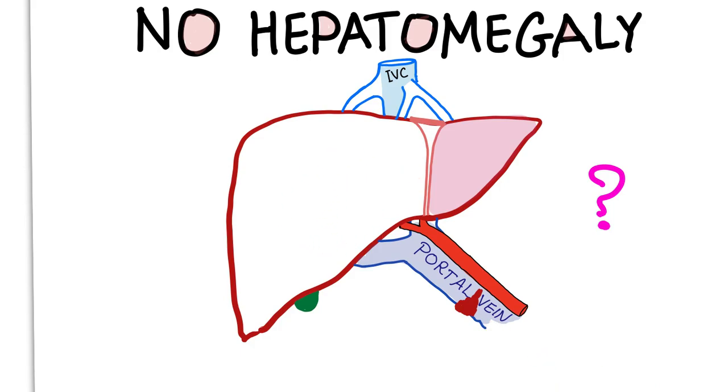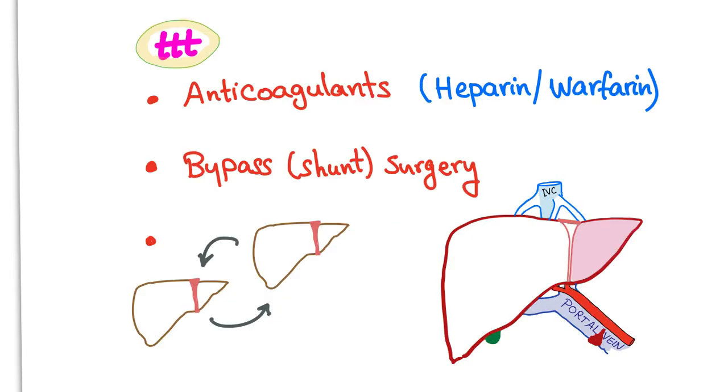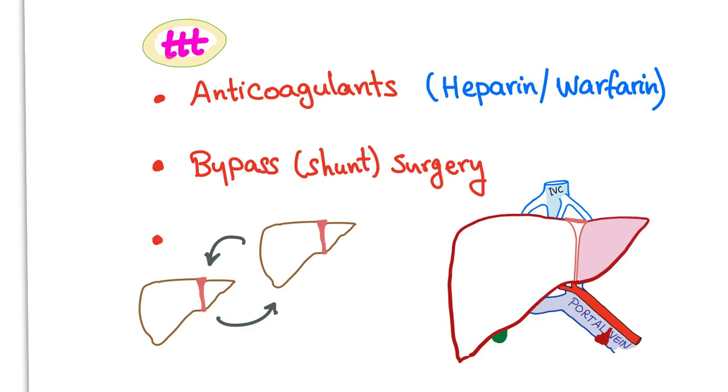How to treat this condition? How to treat portal vein thrombosis? It's a thrombosis so we can use anticoagulants. It's a thrombosis, it's a blockage, we can bypass it.